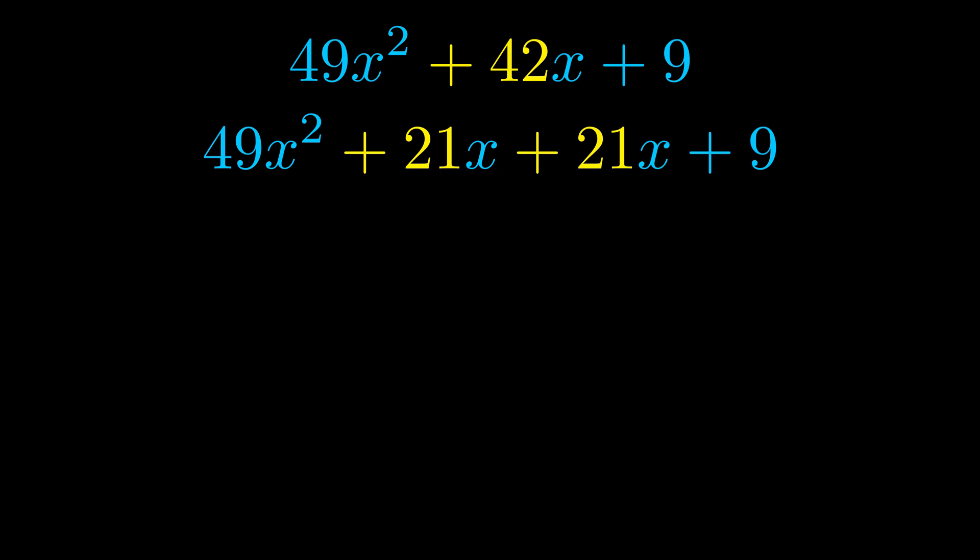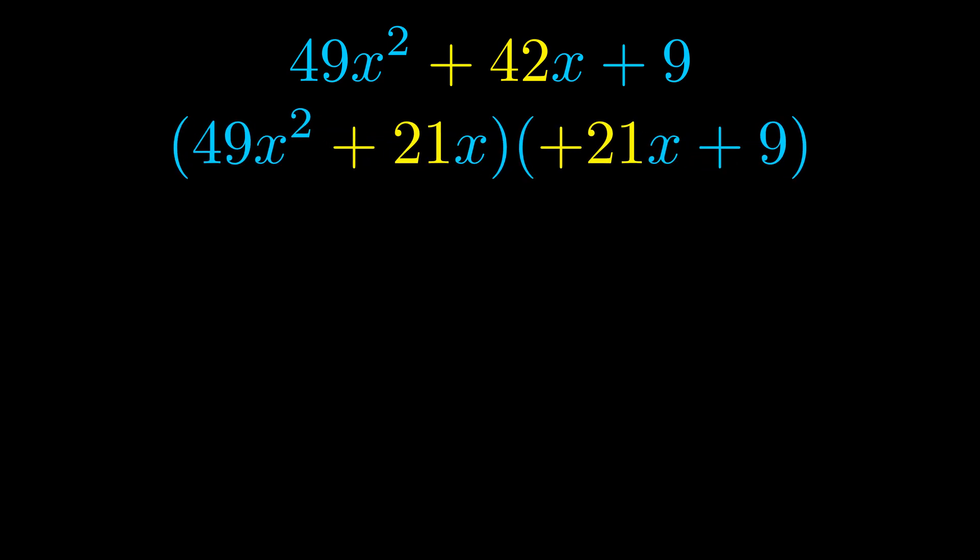Once we've done this we go ahead and put parentheses around the first term and the last term. And we do that so that we can take the greatest common factor out of both terms. We can see the greatest common factor is now outside in green. Notice also how what remains inside of the parentheses is the same in both cases.